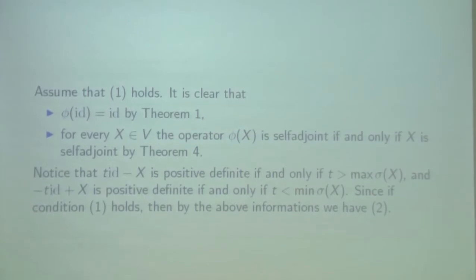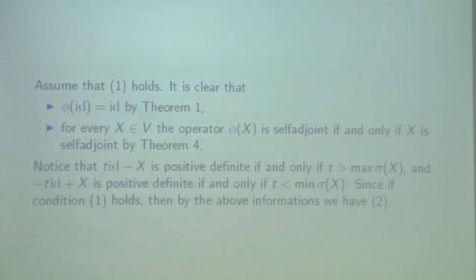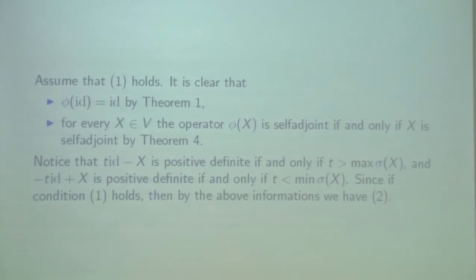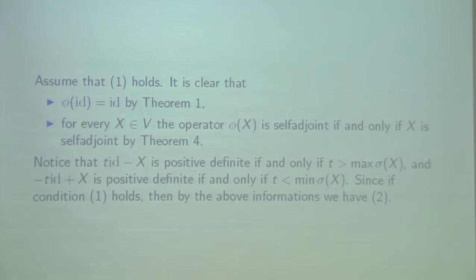We can mention that in our case, if X is self-adjoint, then the classical numerical range is the convex hull of the spectrum, which we use further. Notice that the identity minus X is positive semi-definite if and only if T is greater than the maximum of the spectrum, and minus T·I plus X positive definite if and only if T is less than the minimum of sigma of X. Collecting all these conditions gives point number 2.